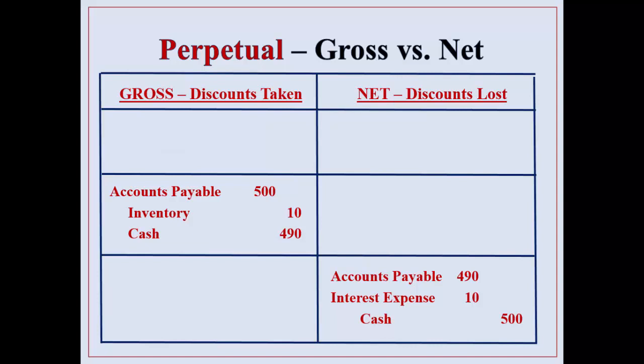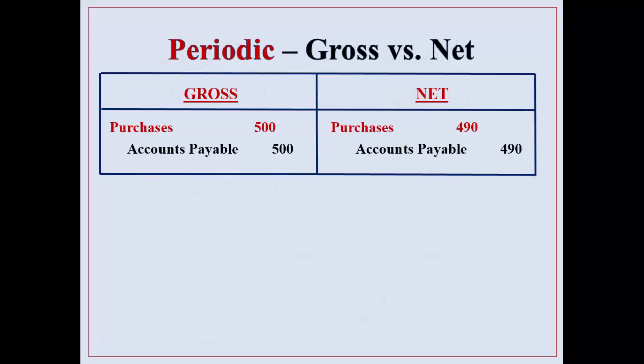The gross method tracks discounts taken, as opposed to the net method which tracks discount loss. So what is your focus as the accountant or even as management? If you're following the gross method you want to track discounts taken. If you're following the net method you want to track discounts lost. It's just a focus — what does management want to pay attention to.